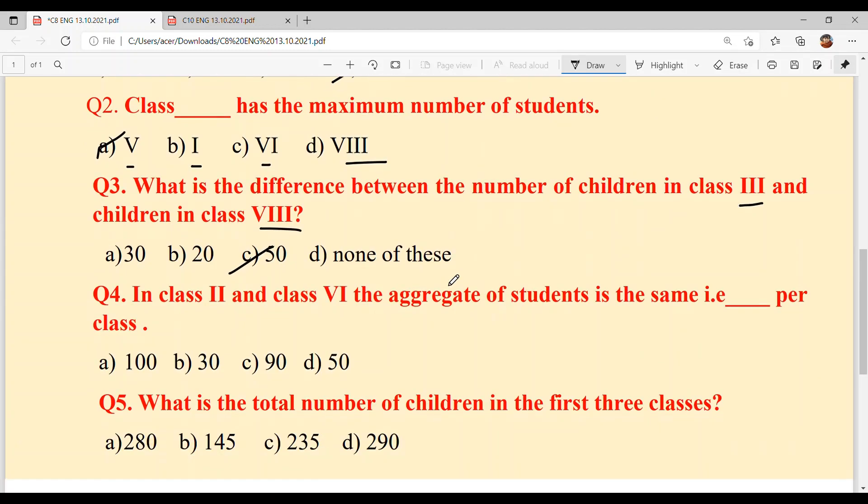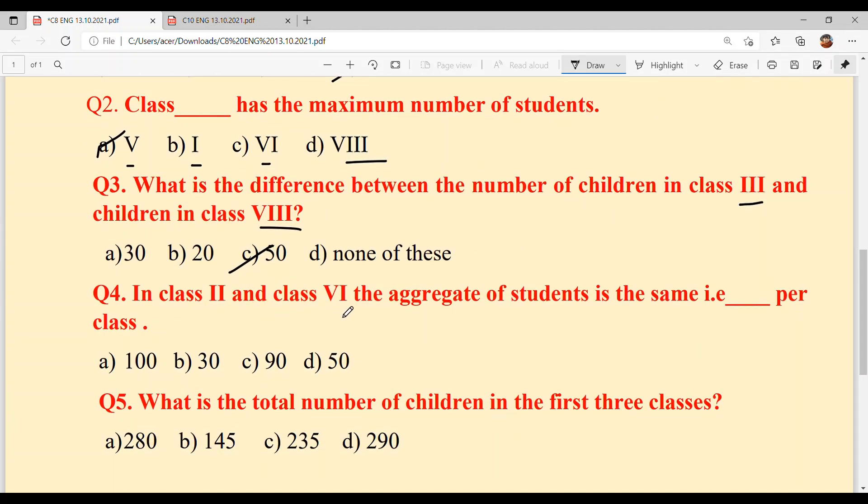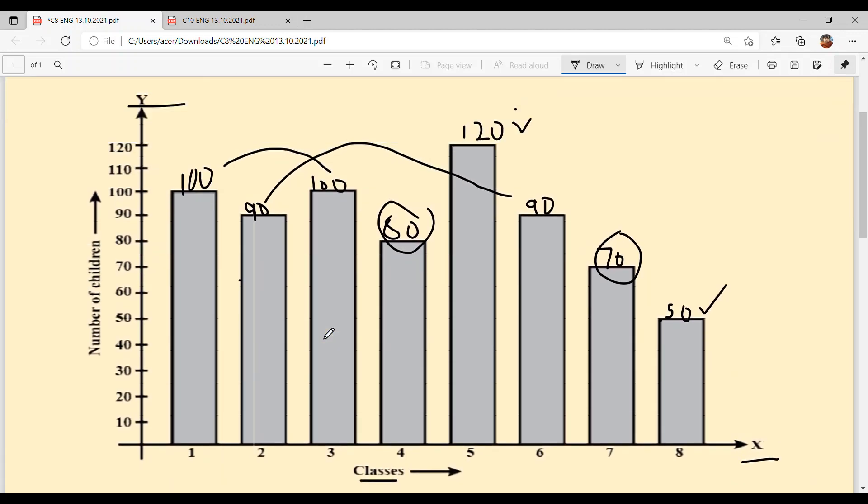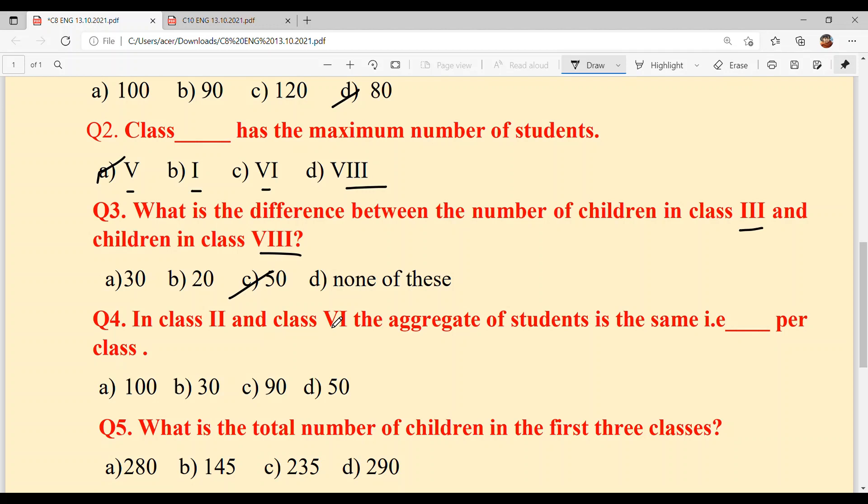Next is, in class second and class sixth, the aggregate of students is the same, that is dash per class. Now second and sixth have the same number of students, which is 90. Option C.